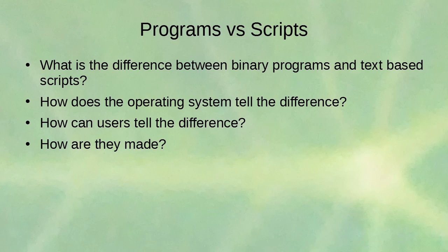How does the operating system tell the difference? There are pieces at the very beginning of a program that indicate what it is. For a script, they all start with the hash and exclamation point — the shebang — followed by the name of a binary program to run. The OS reads that, runs that binary program, and passes the script as input so the interpreter can interpret and run it. How do users tell the difference? You just open the file — if you can read it, it's probably a script.